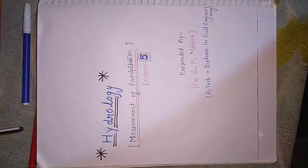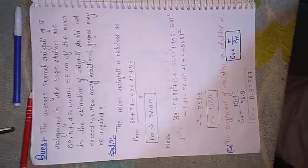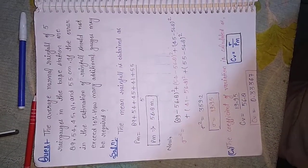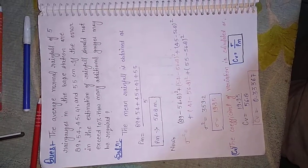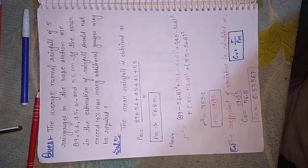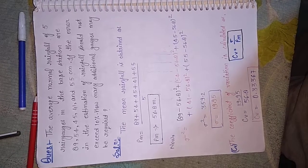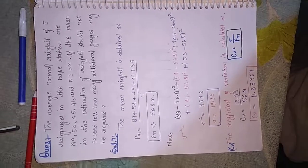Hello friends, today is my 5th lecture of hydrology. In this lecture we have discussed about measurement of precipitation and missing data value. The average normal rainfall of 5 rain gauges at the base stations are 89, 54, 45, 41, and 55 centimeters.